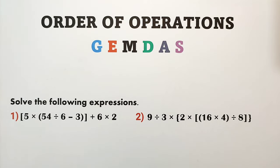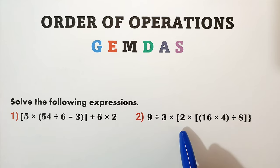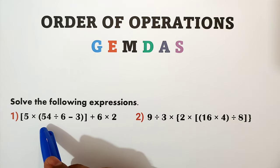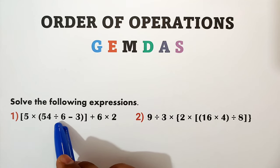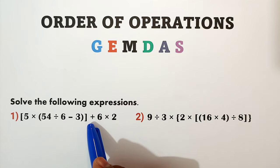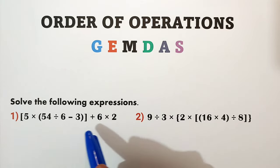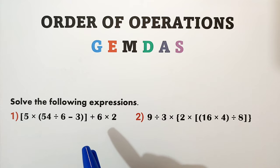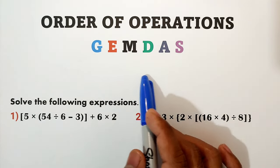Hello everyone. In this video, we'll talk about simplifying expressions wherein two or more operations are involved in one item. As you can see, we have more than two operations: multiplication, division, subtraction, and addition. So we should not follow the operations from left to right, but instead we have to use the order of operations, and that is GEMDAS.